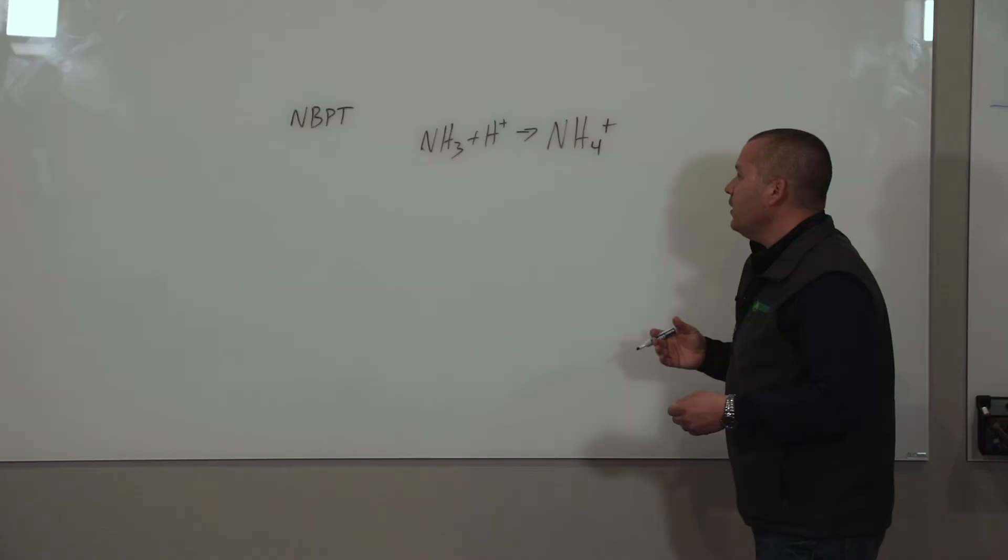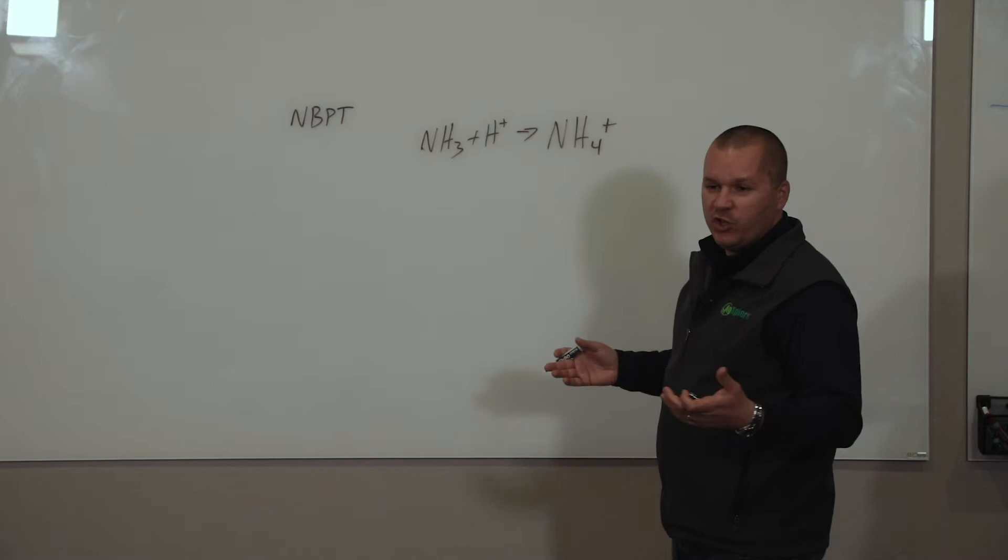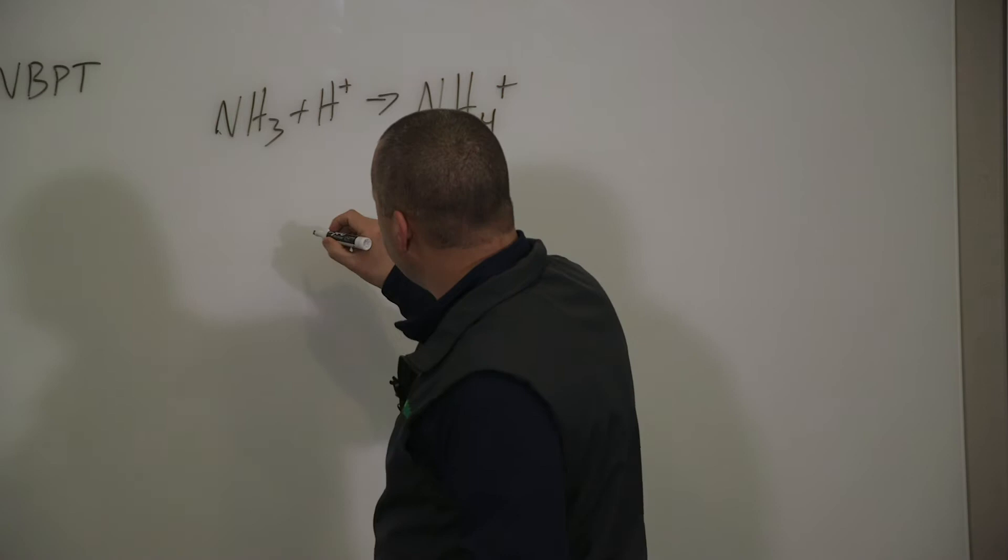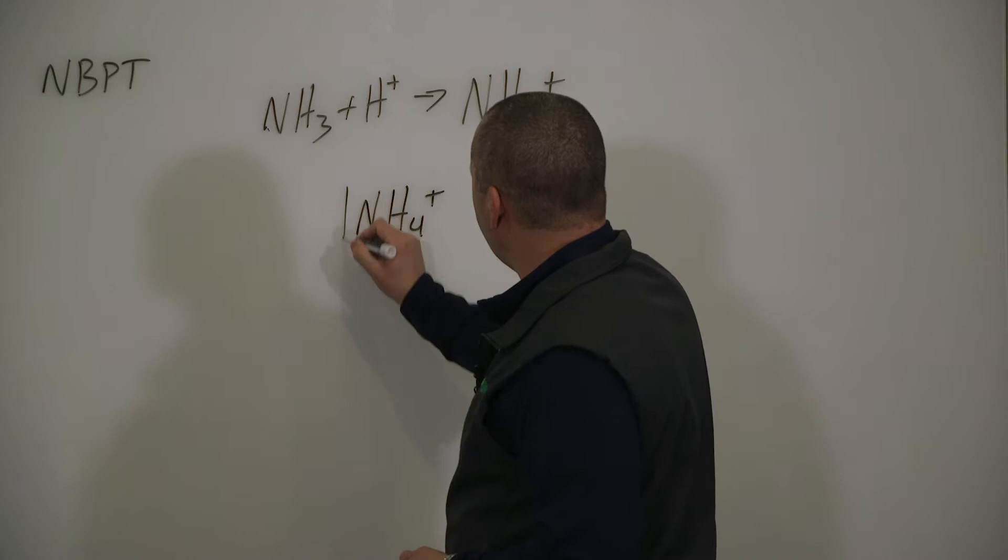And we know that when we put urea and other forms of nitrogen on, we already have some NH4 in like UAN, right? Urea ammonium nitrate. So let's start with the conversion process. NH4 in the soil profile is a plant available form. Okay? The plant can physically take up NH4.